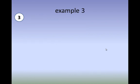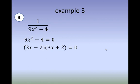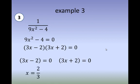Let's take another example: 1 over 9X squared minus 4. Let's equate the denominator to 0: 9X squared minus 4 equal to 0. By factoring, I can see that this one is a difference of two squares. So we have two factors: 3X minus 2 times the quantity 3X plus 2. Solving for the zeros of both factors, we get X equal to 2 thirds and X equal to negative 2 thirds. Therefore, our excluded values are negative 2 thirds and positive 2 thirds — so for this example, we have two excluded values.